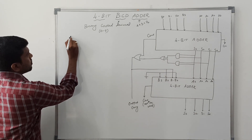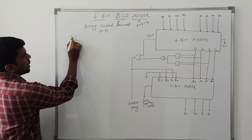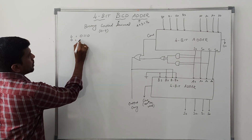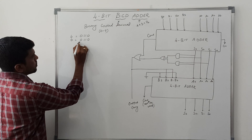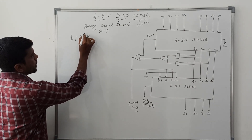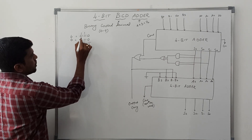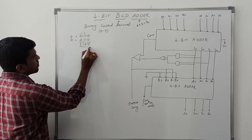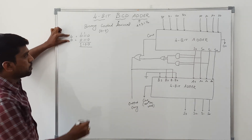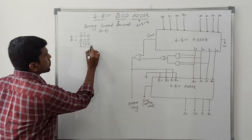For example, consider 6 plus 6. First I write the binary number for 6: 0110. Then 0110 plus 0110. Adding the bits: 0 plus 0 is 0, 1 plus 1 is 0 carry 1, 1 plus 1 is 0 carry 1, giving a result of 12 after adding these two BCD numbers.